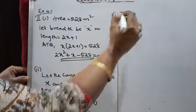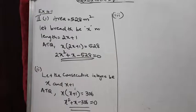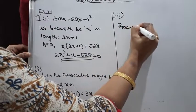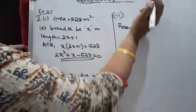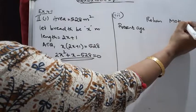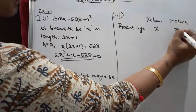Question number 3 is about age. Rohan's mother is 26 years older than him. The product of their ages, 3 years from now, will be 360. We would like to find Rohan's present age. Let Rohan's present age be x, then his mother's present age is x + 26.